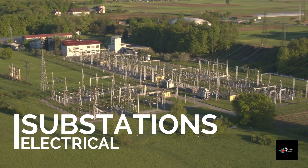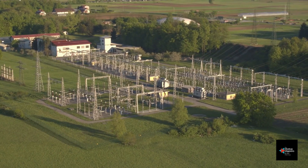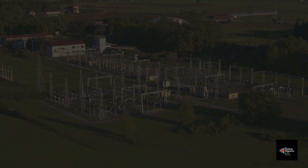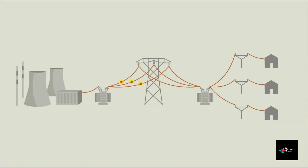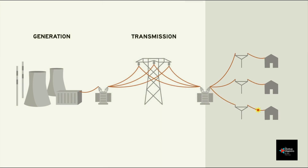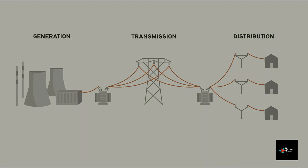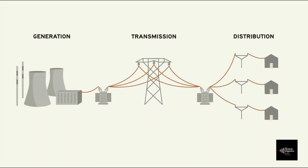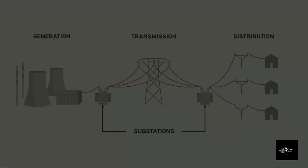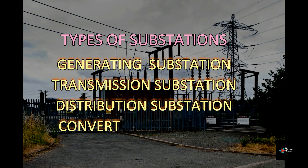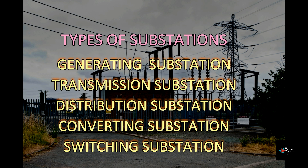Hi friends, today we will look into the basic overview of an electrical substation. Substations are the vital part of an electrical transmission and distribution system. Mostly, substations are used for changing the level of voltage at various points in the grid. Based on their function, substations are classified into different types: generating substation, transmission substation, distribution substation, converting substation, and switching substation.